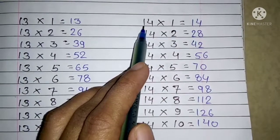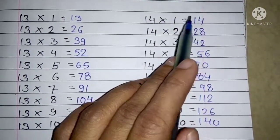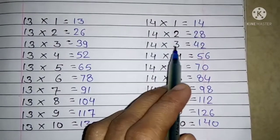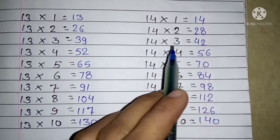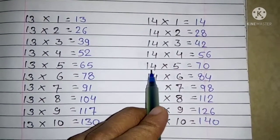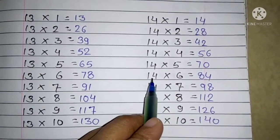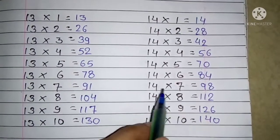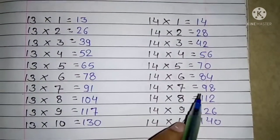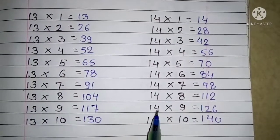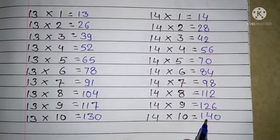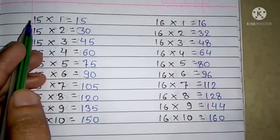Table 14: 14 ones are 14, 14 twos are 28, 14 threes are 42, 14 fours are 56, 14 fives are 70, 14 sixes are 84, 14 sevens are 98, 14 eights are 112, 14 nines are 126, 14 tens are 140.